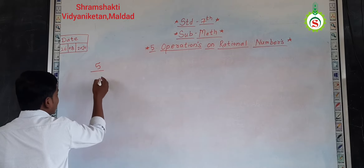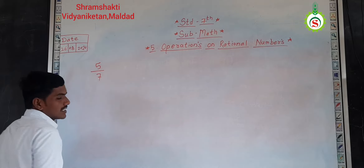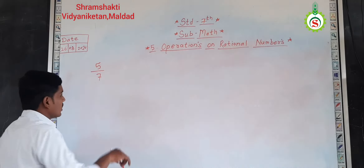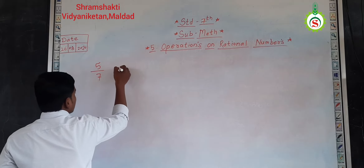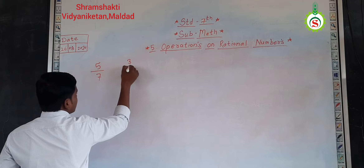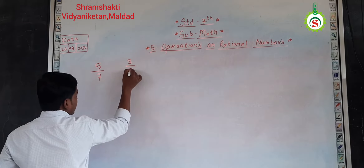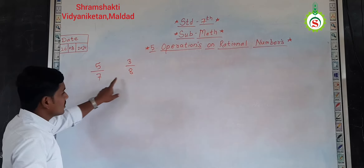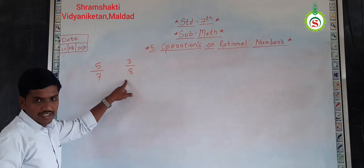suppose at the numerator I will take five and at the denominator I will take seven. So, that is your rational number. Now, second rational number — suppose I will take three by eight. So, three by eight. Now, add those two rational numbers: five by seven and three by eight.